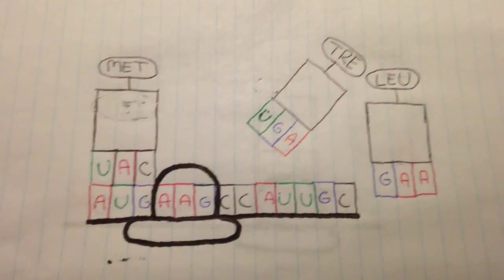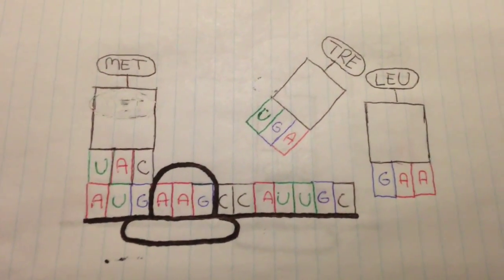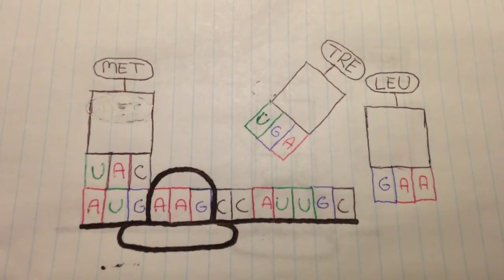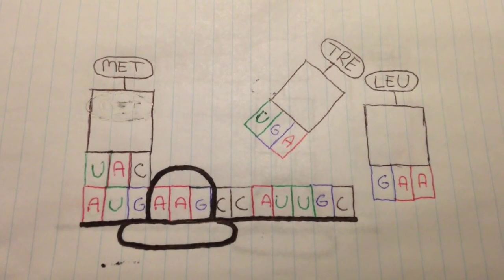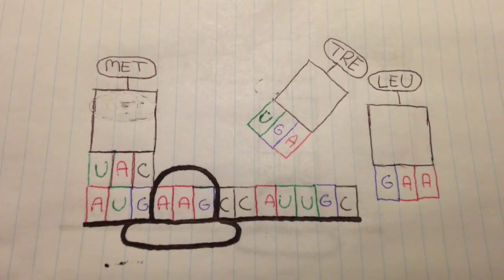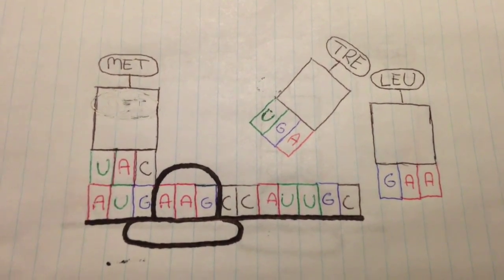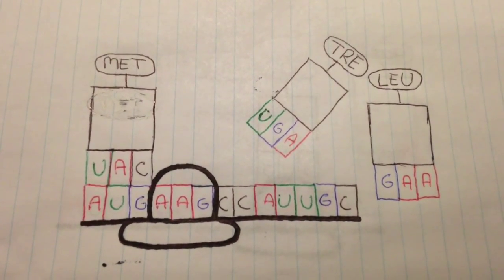The ribosome starts reading at a start codon and ends the reading once a stop codon comes along. Free-floating tRNAs come and attach once they find base pairs that match.